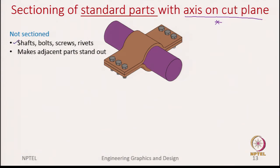The reason why we do not show sectioning for standard parts is to ensure that the other adjacent parts stand out. We do not want to focus more on the standard parts but instead on the custom parts you have designed. How do you make them stand out? By ignoring or avoiding hatching on the standard parts.